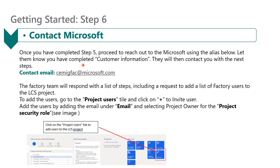Once you've done, contact Microsoft letting them know you've completed the customer information section using the provided email address. The factory team will then respond with a list of steps, including a request to add a list of factory users into the LCS project. To add the users, go to the project users tile, click on the plus sign to invite a user, add the users by entering the email, and select project owner for the project security role.